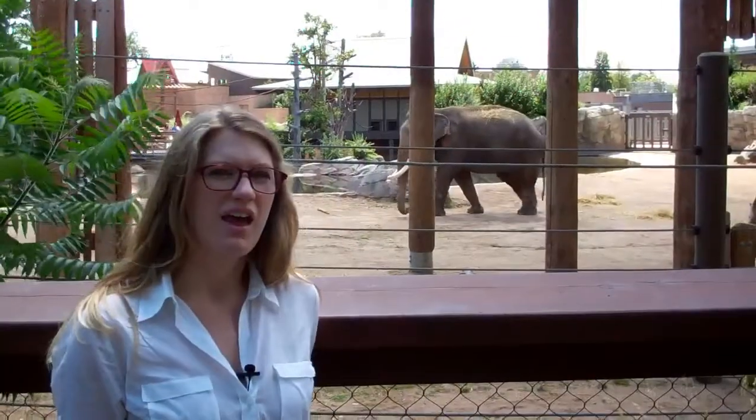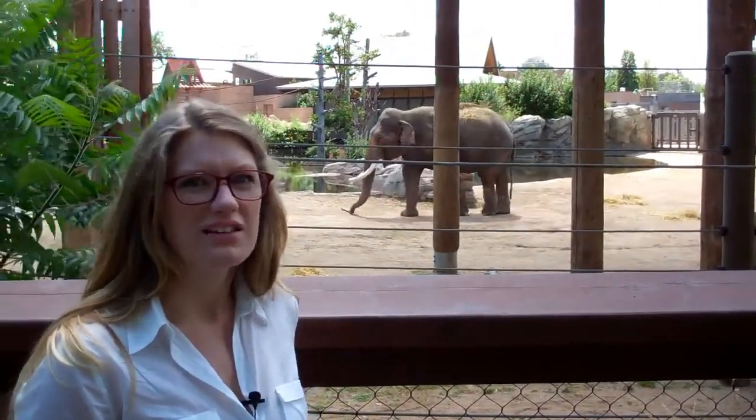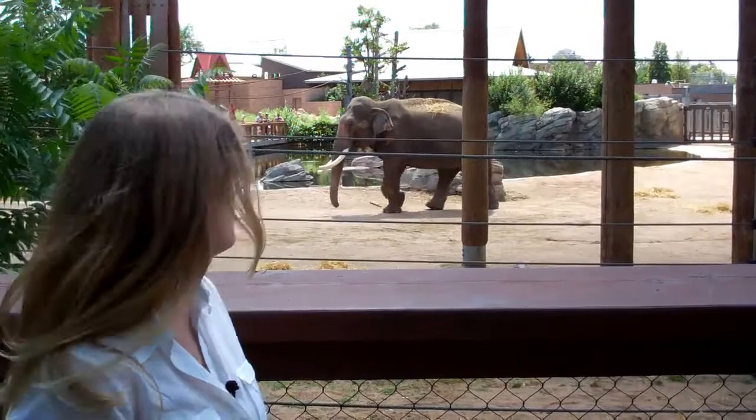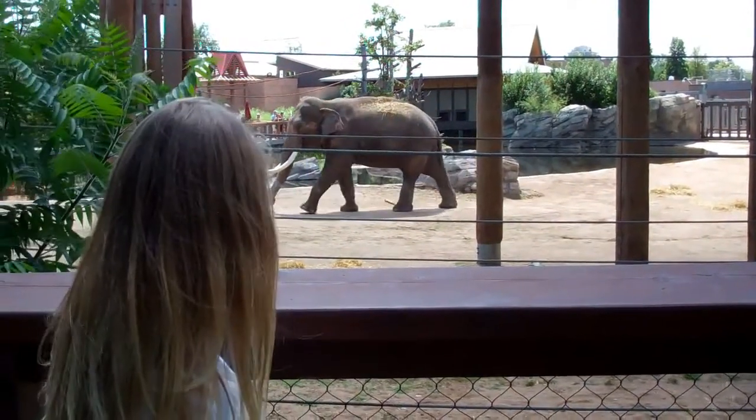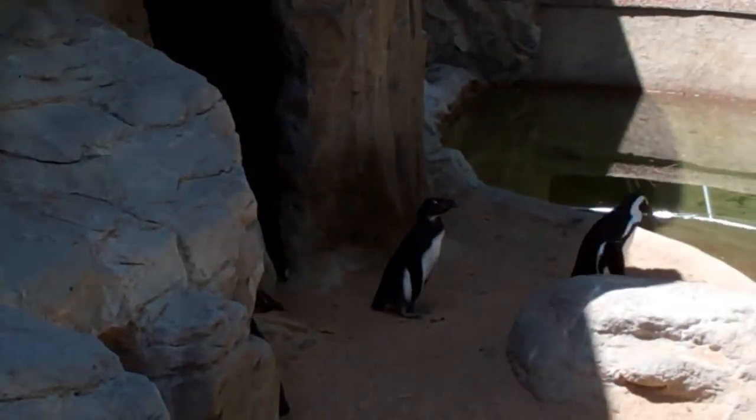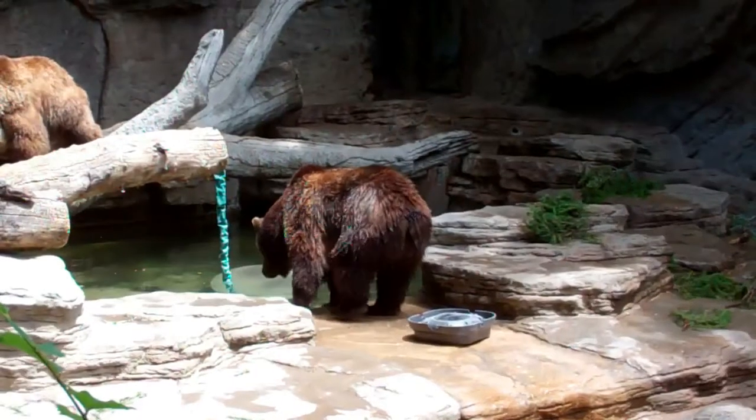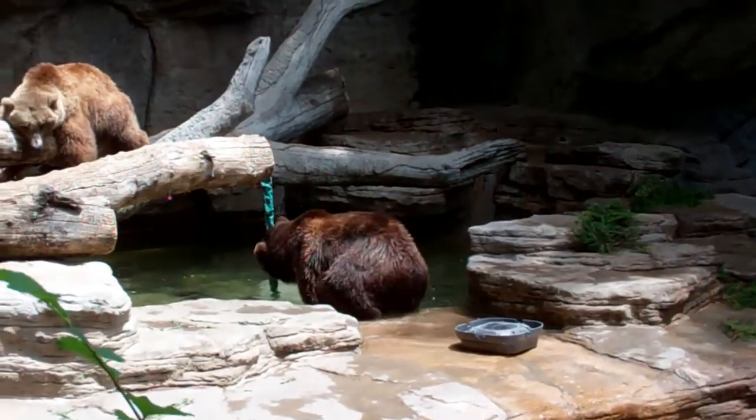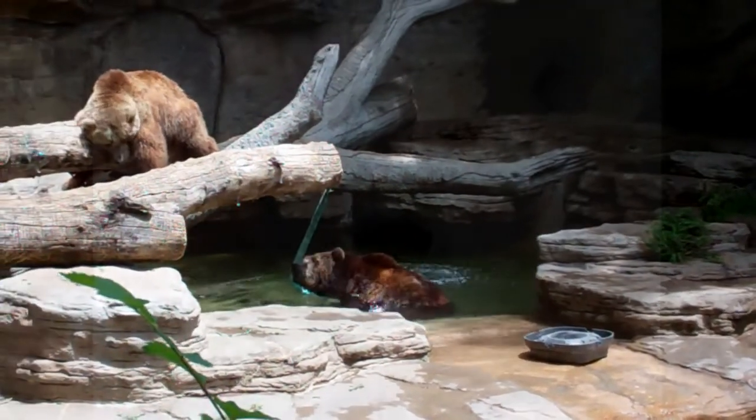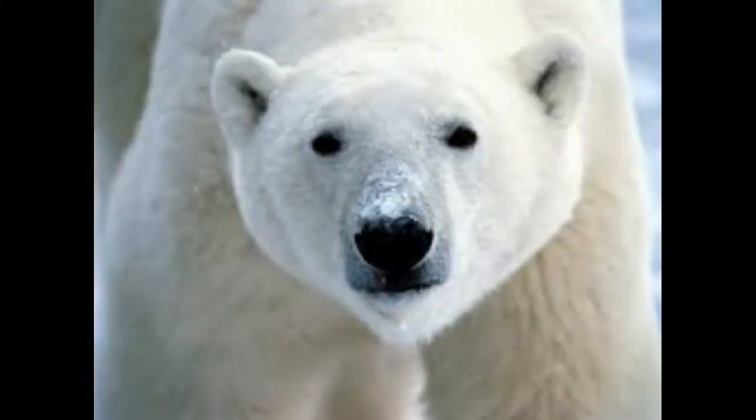But have you ever come to the zoo and just wondered how all these animals came into existence in the first place? How did the elephant get such big ears and its long, funny nose? Why did the penguins lose their ability to fly and gain the ability to swim? And something we'll be focusing on today: How can different types of bears, like the brown bear and polar bear, look different, live in different environments, and have completely different diets, but still be closely related?